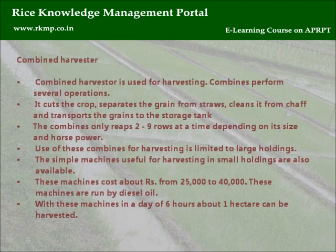In the event of labor shortage or during periods of peak labor demand, mechanical harvesting is favored. The combined harvester is used for harvesting and performs several operations: it cuts the crop, separates the grain from the straw, cleans it from chaff, and transports the grains to the storage tank. Combines reap 2 to 9 rows at a time, depending on size and horsepower. Use of combines is limited to large holdings, though simple machines for small holdings are also available.